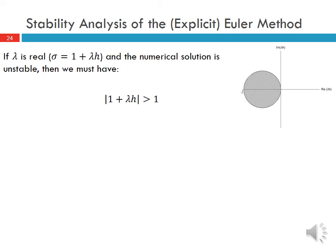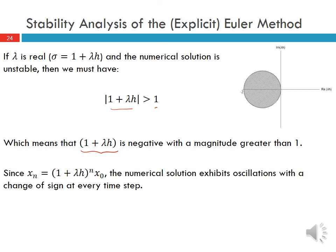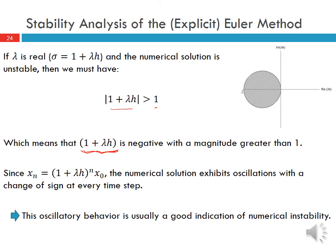If λ is real and the numerical solution is unstable, then |1 + λh| > 1. Since λ is negative, this means the quantity (1 + λh) must be negative with a magnitude greater than 1. For the explicit Euler method, Xₙ = (1 + λh)ⁿ · X₀, so the numerical solution exhibits sign oscillations at every step when this quantity is negative with magnitude greater than 1. This oscillatory behavior is usually a good indication of numerical instability.